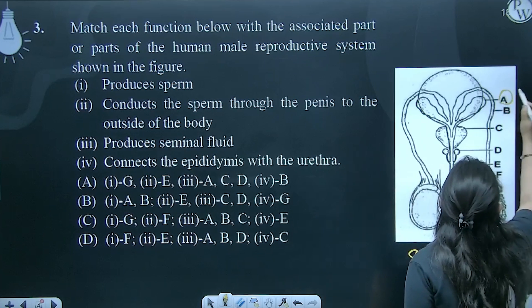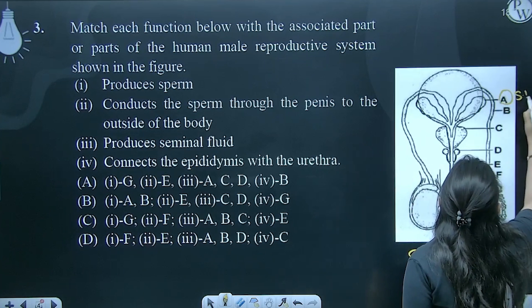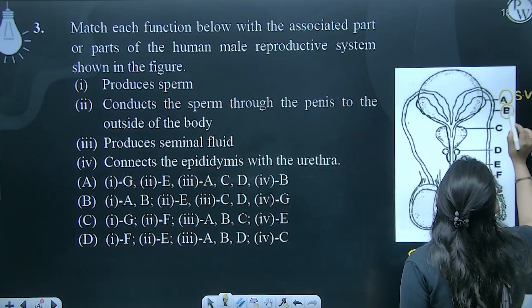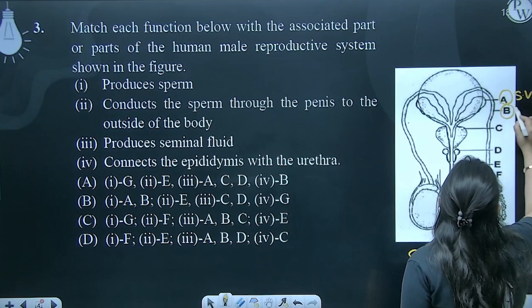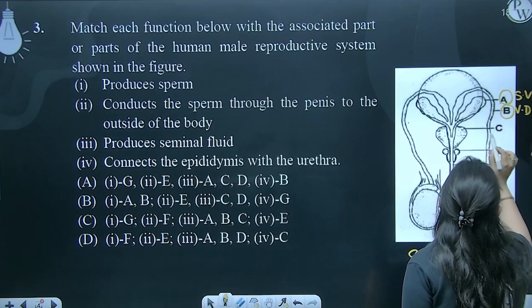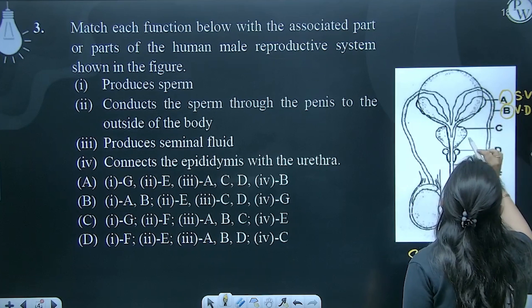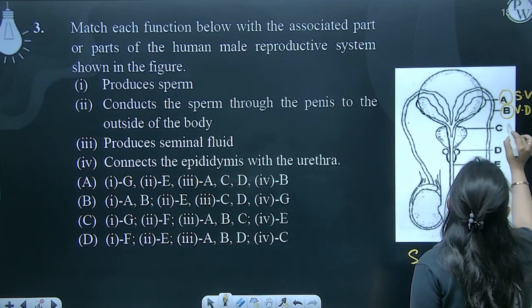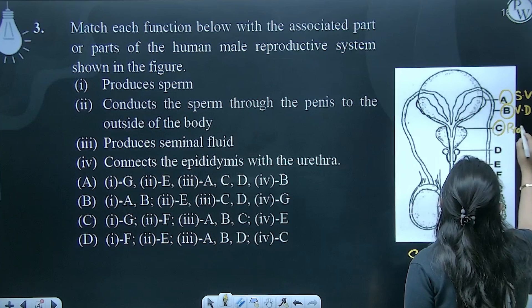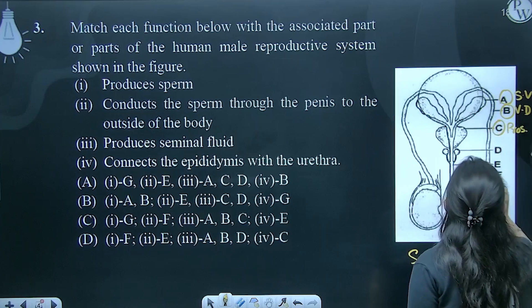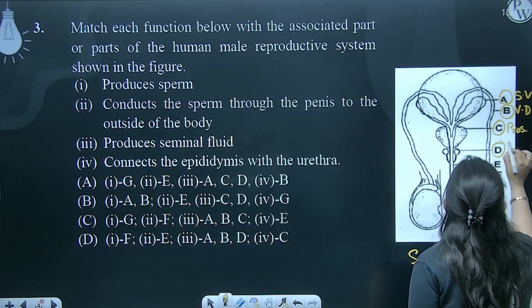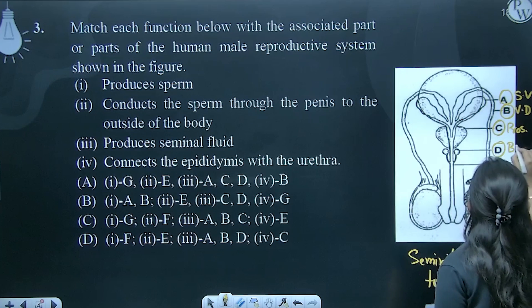Yahaan pe A hoga seminal vesicle. B is your vas deferens. C is prostate. D is bulbo-urethral.